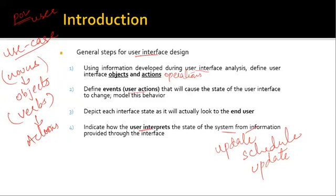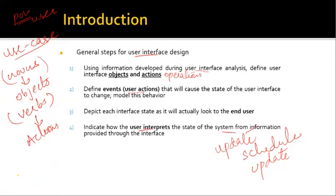During all these steps, the designer needs to follow the three golden rules of user interface design. You're also going to focus on how the interface is going to be implemented — how the different interfaces you want the user to see are going to look, and how all of these things are going to be implemented.